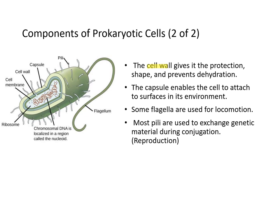The cell wall, seen here in light green, gives the cell protection and shape, and prevents dehydration. The capsule, which is on the outside of the cell wall, enables cells to attach to surfaces through pili and other properties. Some prokaryotes use flagella for locomotion. Most pili are used to exchange genetic material during conjugation.